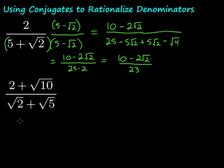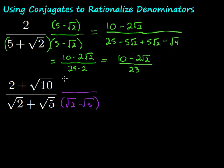Let's take a look at this second example. Again, we have square roots in the denominator, so we want to get rid of them by multiplying by the conjugate. The conjugate just has the opposite sign of whatever's in the middle, so this is going to be the square root of 2 minus the square root of 5. And we do the same thing on the top — we're just creatively multiplying by 1, so we have square root of 2 minus the square root of 5 on top as well.